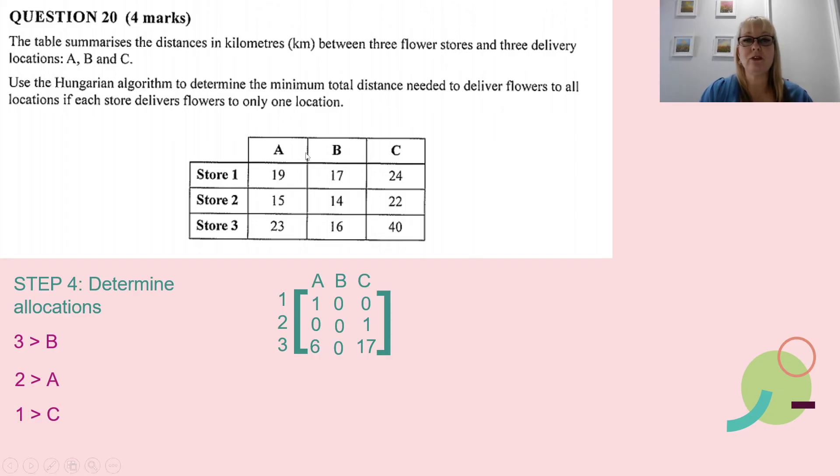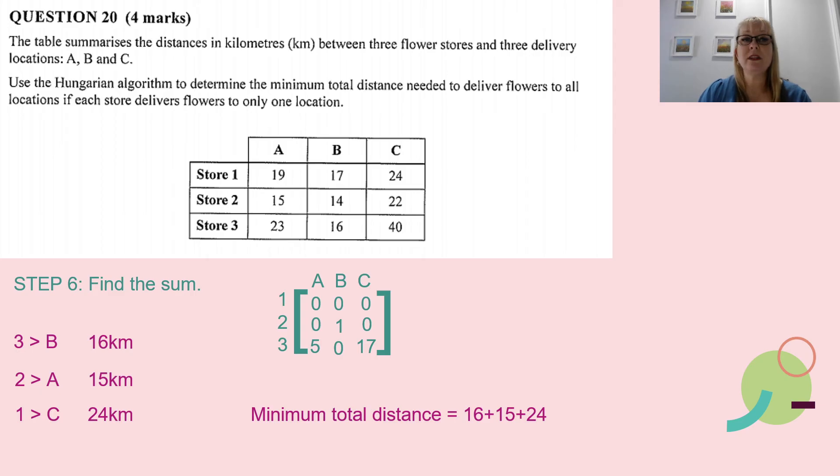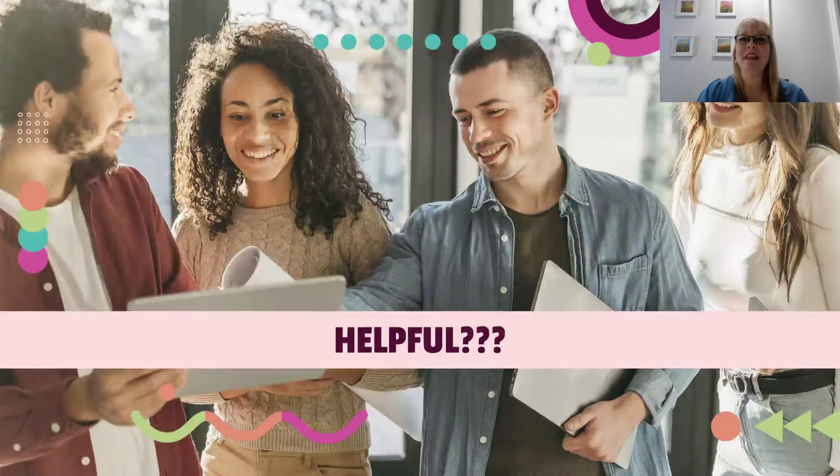The question didn't ask me what the allocations were though. It's asking for the minimum total distance. Now what I need to do is go back to my original matrix, which is up here, and work out the distances of going from store three to store B, from store two to store A, and store one to store C. This allocation here was worth my third mark, but now calculating those distances is going to be worth my fourth mark. I'm going to take that 16 for store three to store B, take that 15 kilometers there, and then take the 24 kilometers there and put those next to my allocations. Now I need to actually add those together to work out that minimum total distance for all the stores to do their deliveries, and that will be 55 kilometers for all three stores to deliver to where they need to go. Working out that minimum total distance was my fourth and final mark.